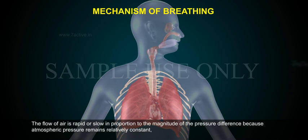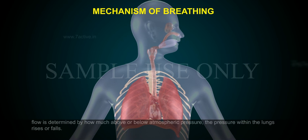The flow of air is rapid or slow in proportion to the magnitude of the pressure difference. Because atmospheric pressure remains relatively constant, flow is determined by how much above or below atmospheric pressure the pressure within the lungs rises or falls.